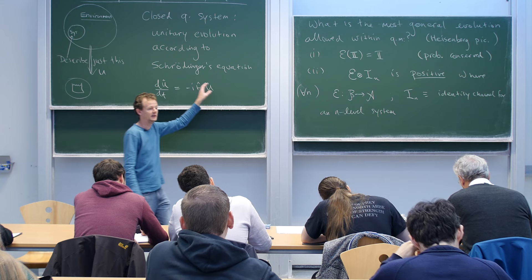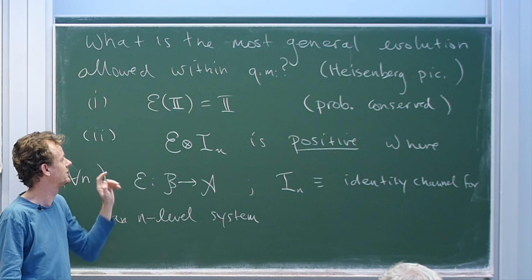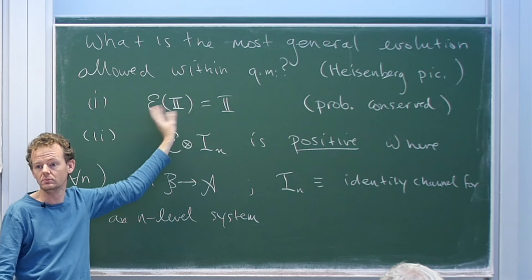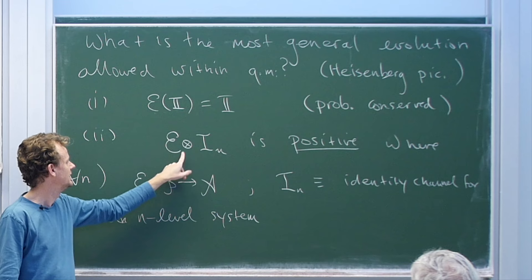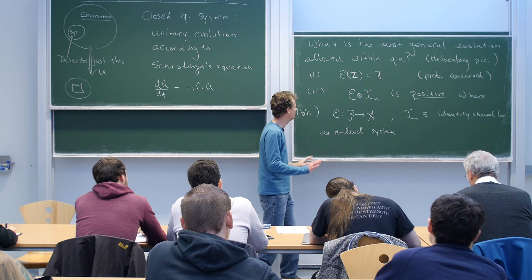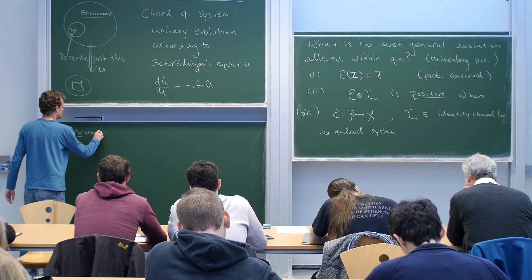Let's check that unitary evolutions satisfy these two conditions. If E corresponds to a unitary evolution, then E acts as conjugation by U: E(·) = U†(·)U. Does that preserve the identity? U times U† is the identity, so that's straightforward.